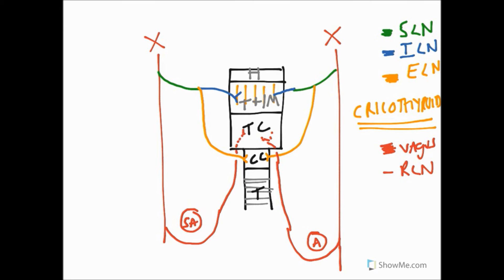The recurrent laryngeal nerve innervates all the muscles of the larynx except the cricothyroid — that being innervated by the external laryngeal nerve — and it is sensory to everything below the cords. So: vagus nerve gives rise to the superior laryngeal nerve, branching into internal and external branches, and the recurrent laryngeal nerve, which hooks around blood vessels to come back up and supply the larynx. I'll see you all again soon.